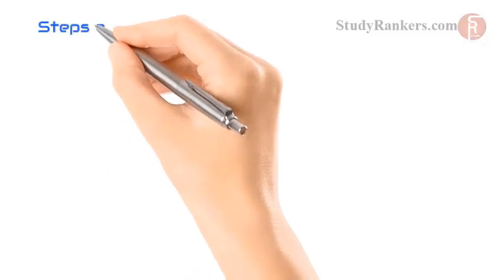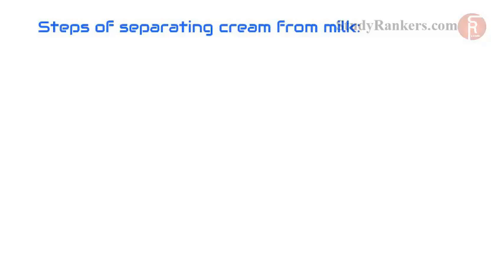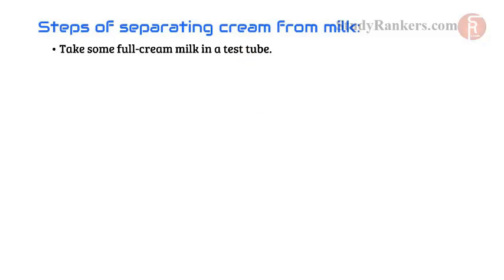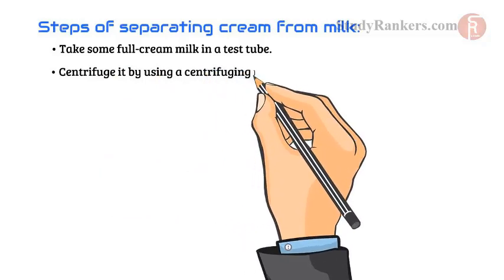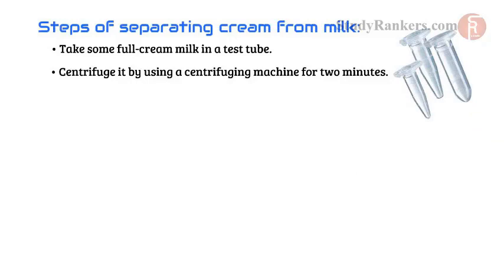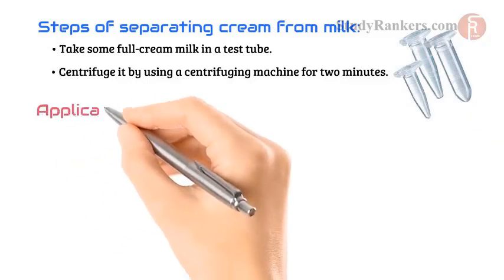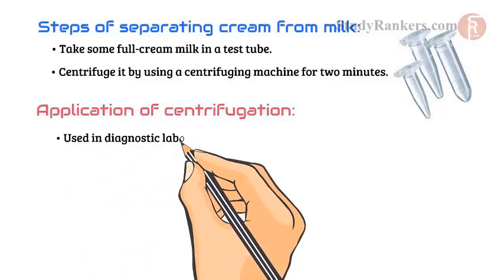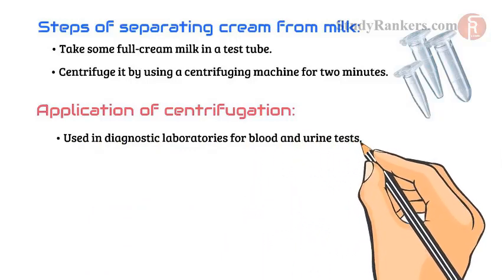To understand centrifugation properly, let's see the steps involved in separating cream from milk. First, we take some full cream milk in a test tube and centrifuge it using a centrifuging machine for 2 minutes. After that, we observe that milk settles at the bottom of the test tube and cream, being lighter, is present at the top. In this way, cream and milk are separated by centrifugation.